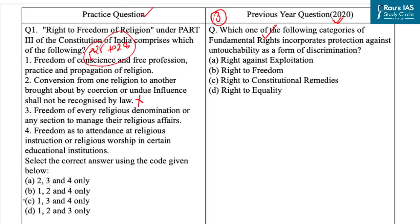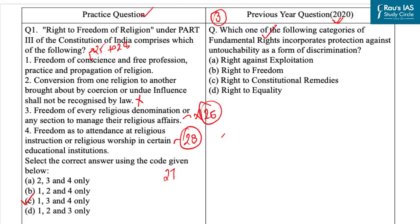With this, our correct answer is option C. The third option is freedom of every religious denomination or any section to manage their religious affairs. This is Article 26, and an important fact is that this is subject to public order, morality and health. The last option is freedom as to attendance at religious worship in certain educational institutions, which is Article 28. Article 27 is freedom as to payment of taxes for promotion of any particular religion.